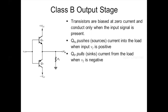In the Class B output stage, the transistors are biased at zero current and conduct only when the input signal is present. The NPN transistor QN pushes current into the load when Vi is positive, acting as a source, whereas QP pulls the current from the load when the input voltage is negative, acting as a sink. This configuration is called a push-pull configuration.